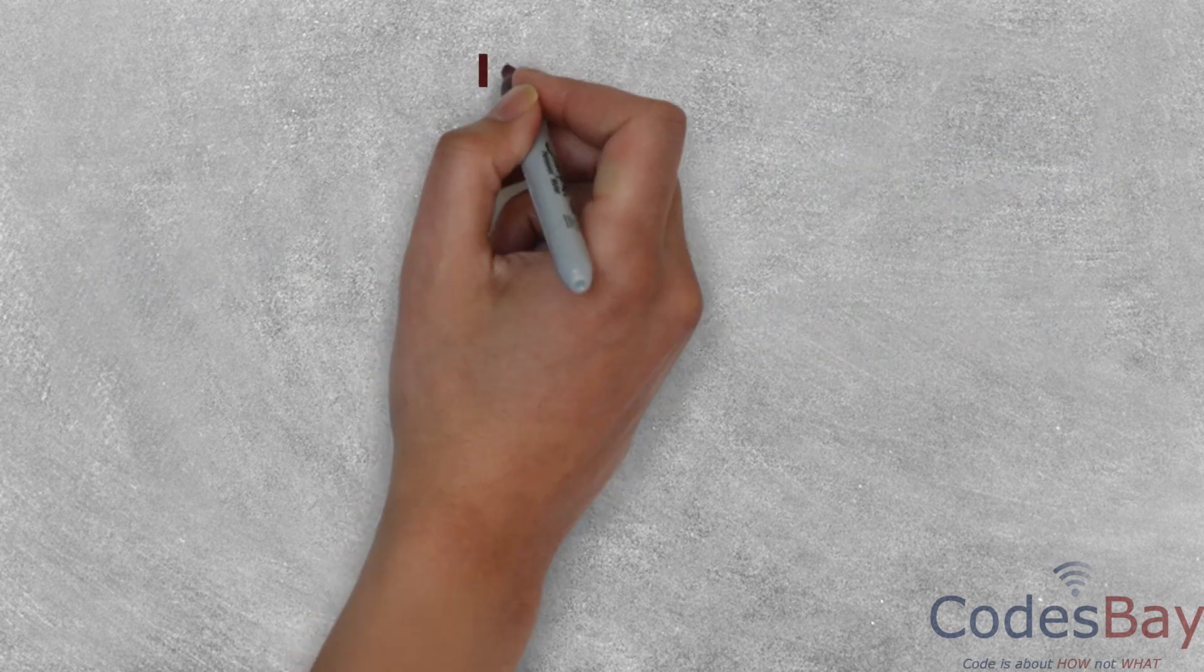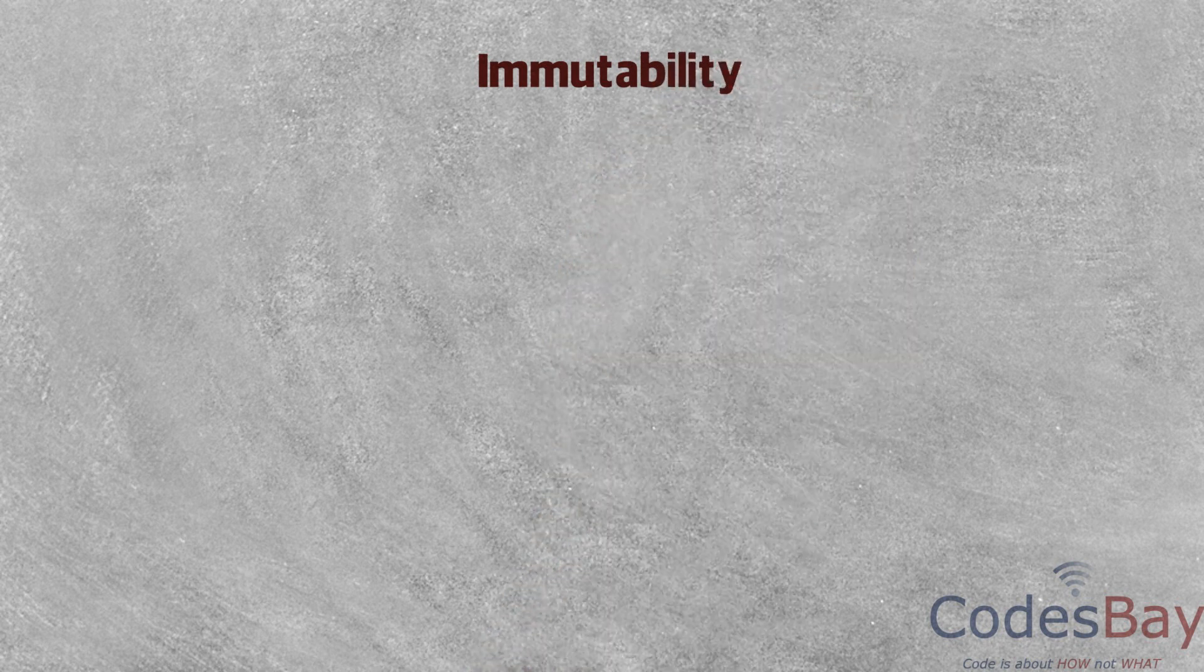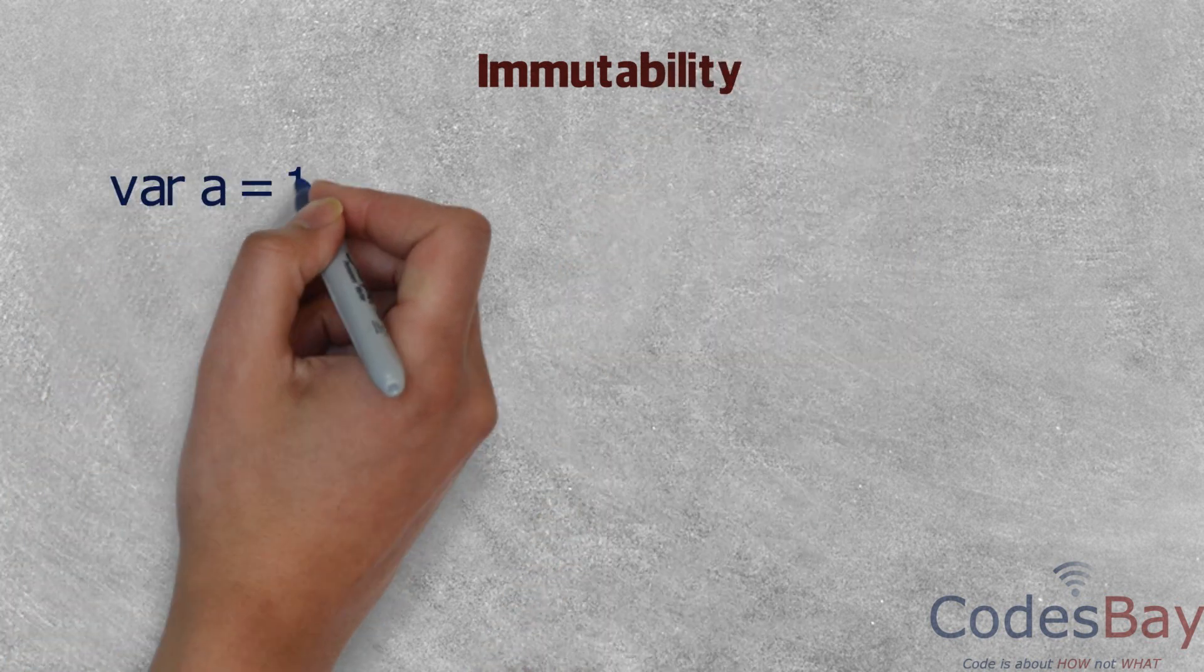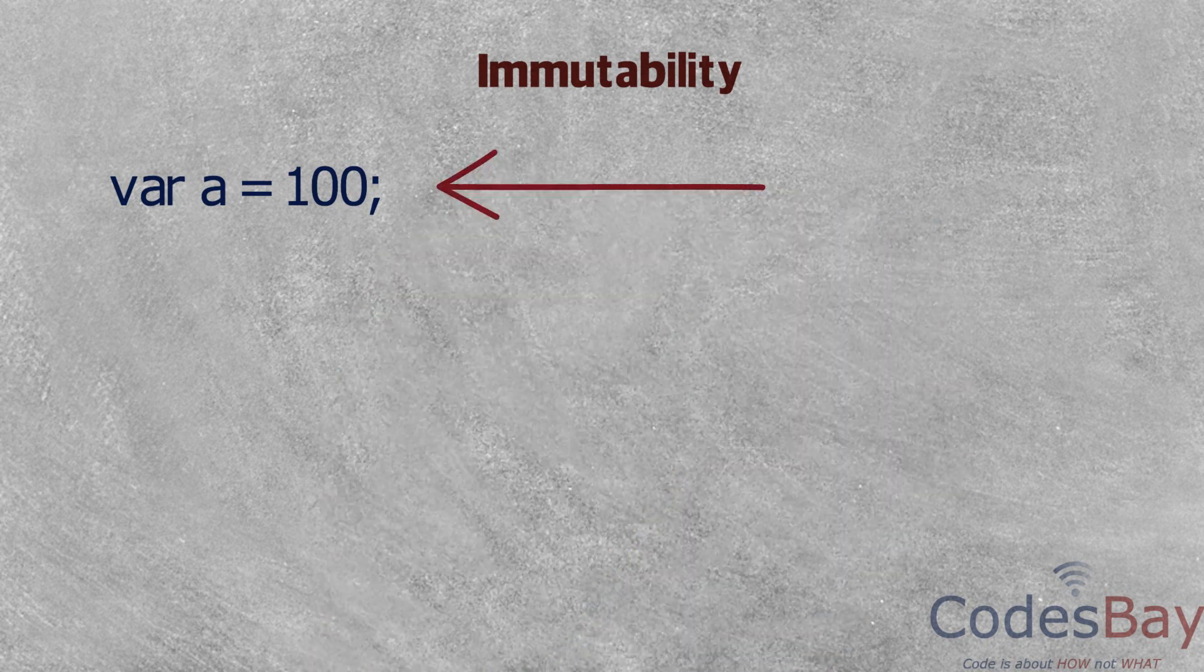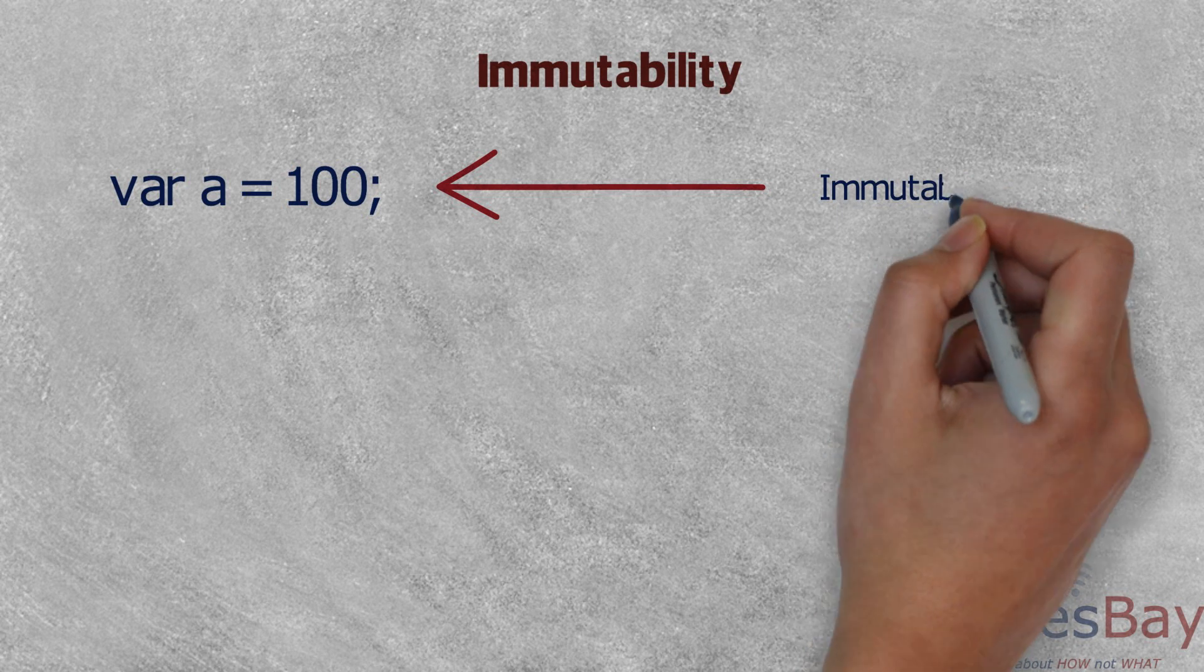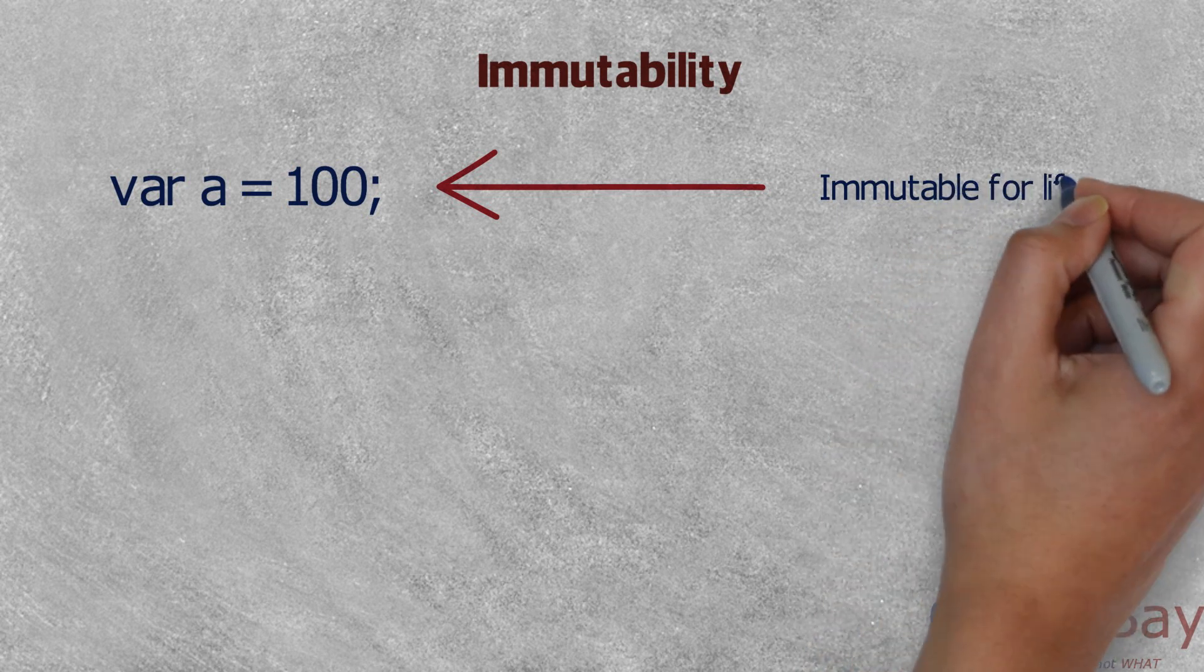One of the very important aspects of functional programming is immutability. For example, if I create a variable called a with a value 100, it will remain 100 for the lifetime of the variable called a, which means it cannot be changed.